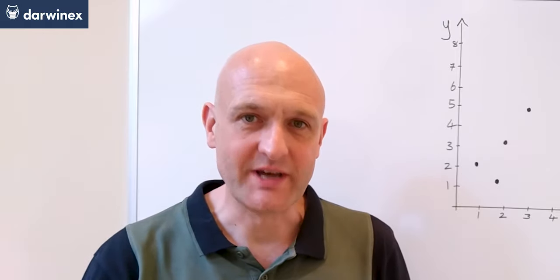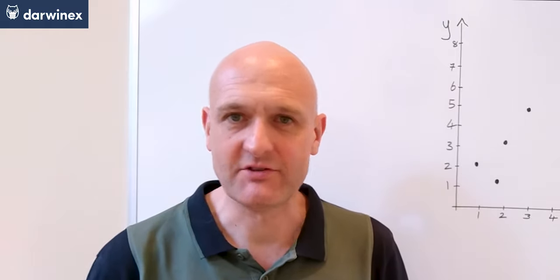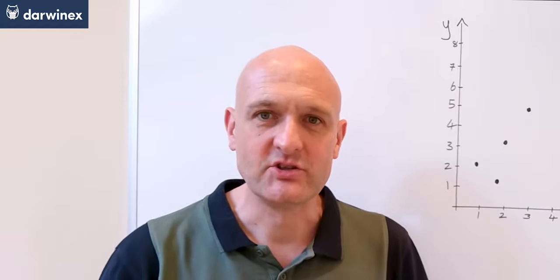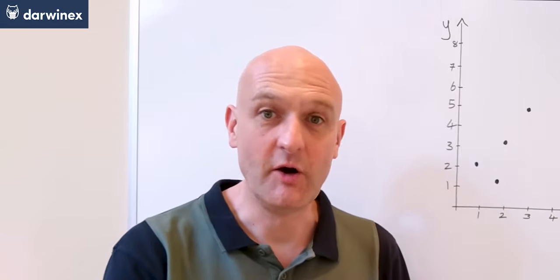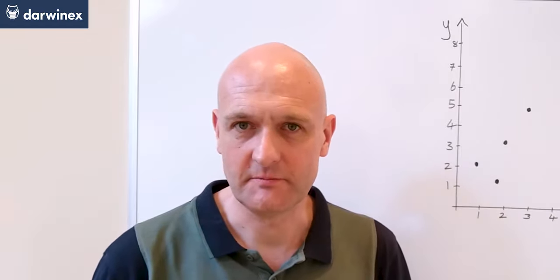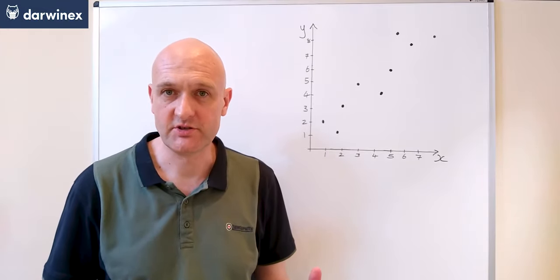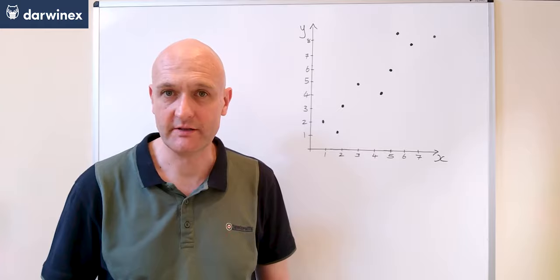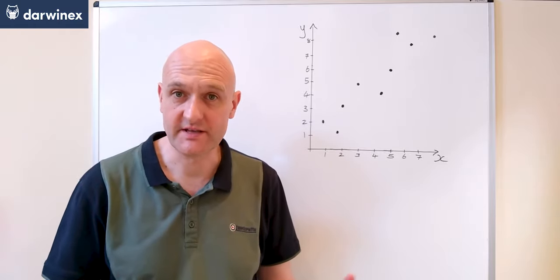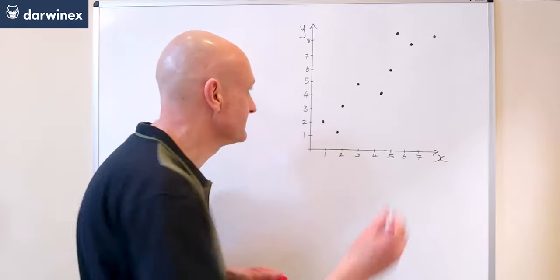But our model needs to be generalized if it's going to have a chance of working, and a generalized model is the opposite of an overfitted model. So to me, this looks like a fairly simple linear relationship between the x and y values, and so the best generalized model for this is a straight line, something like this.